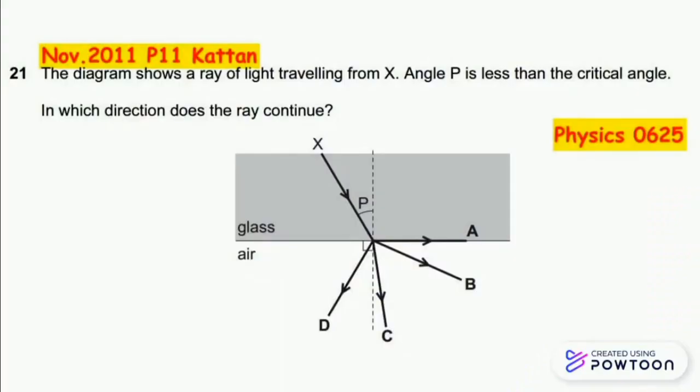Hi guys and welcome to our physics series. Today we have November 2011 paper 11, question 21. The diagram shows a ray of light traveling from X. Angle P is less than the critical angle. In which direction does the ray continue?